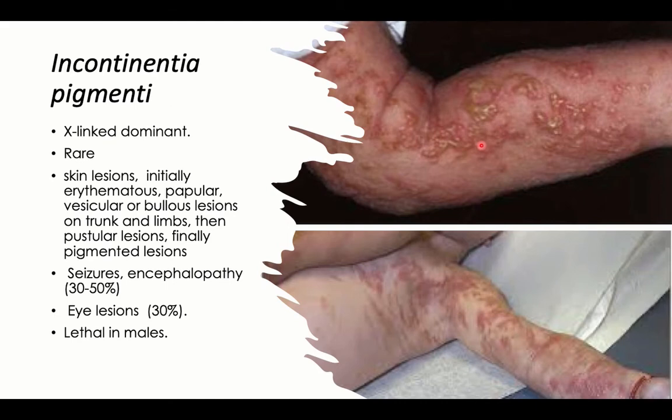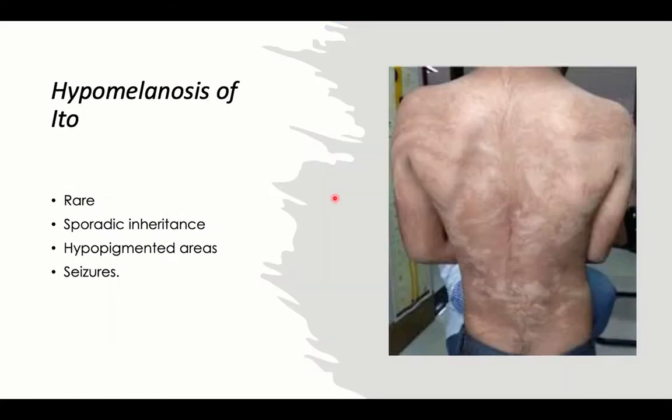The characteristic dermatological presentation is associated with neurological manifestations in the form of severe encephalopathy and seizures. In 30 to 50 percent of cases, 30 percent have eye lesions up to blindness. So when you meet a girl with encephalopathy and seizures associated with blindness or severe vision affection plus these characteristic dermatological lesions, this is incontinentia pigmenti.